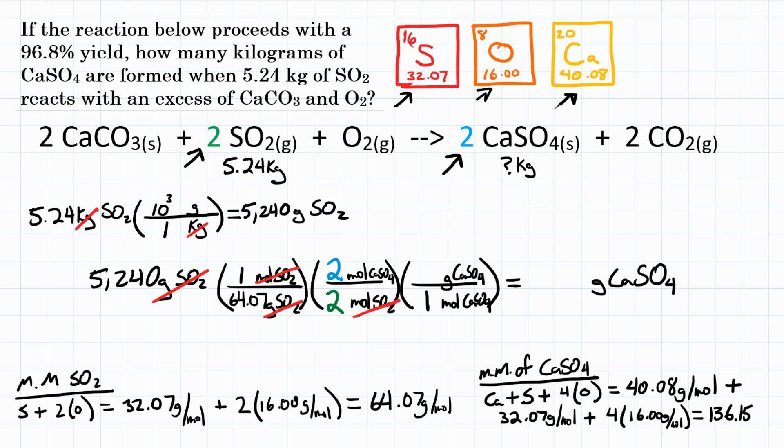136.15 grams per mole. So that goes in our last step, 136.15. Moles of CaSO4 cancel. We're left with grams of CaSO4, which is what we want. So let's do the math. 5,240 divided by 64.07 times 2 divided by 2 times 136.15 equals right about 11,135. So that's what we theoretically could get.